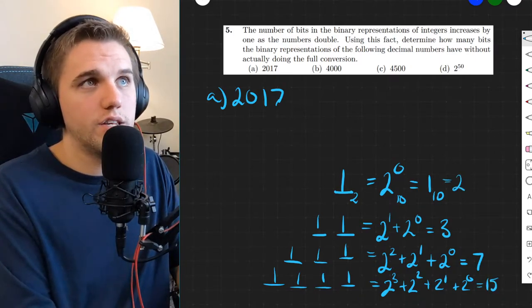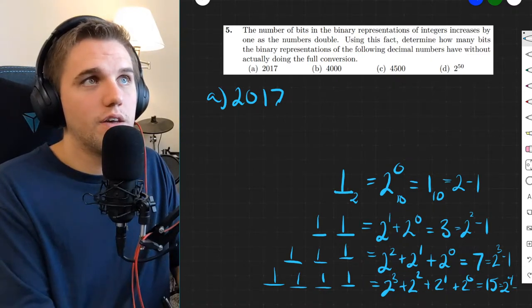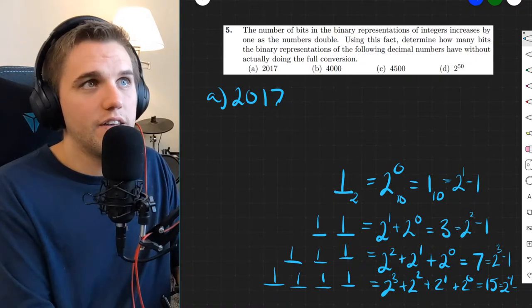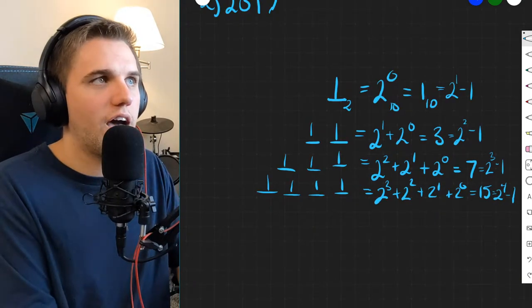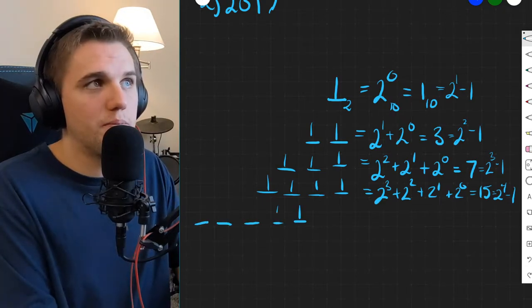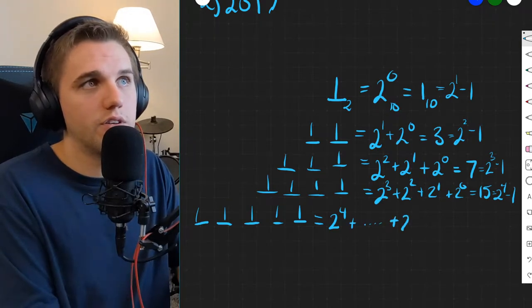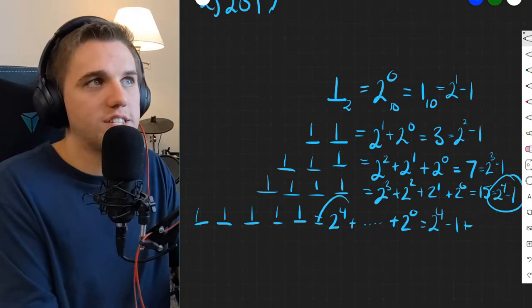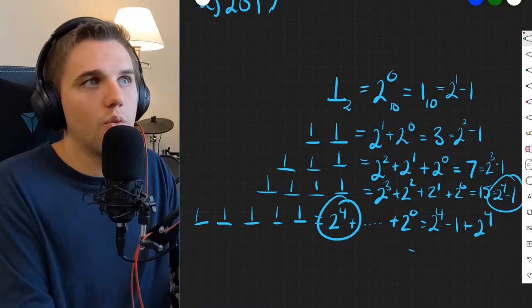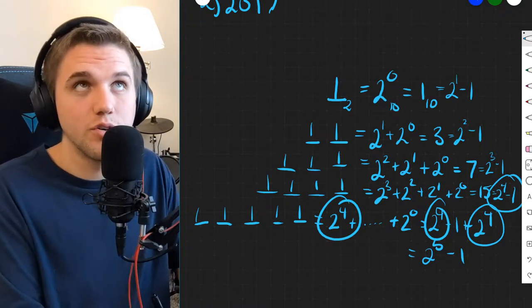One is two minus one, three is two squared minus one, seven is two cubed minus one, 15 is two to the fourth minus one — and this is not coincidental. What if we had five bits? The largest binary number with five bits is ones in all placeholders, from two to the fourth down to two to the zeroth. That's the same as the last answer, two to the fourth minus one, but we have this extra term, two to the fourth power, making it two to the fifth power minus one.